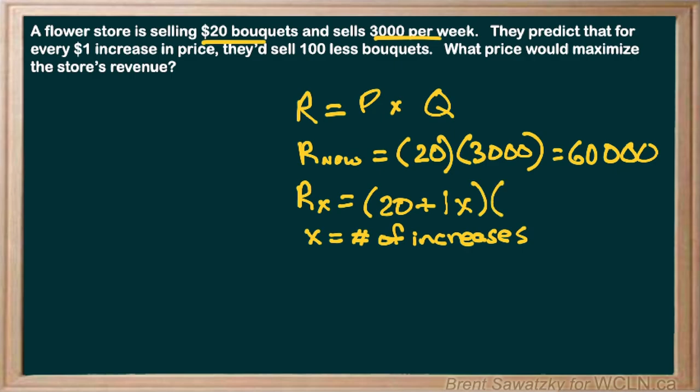And so that's the price in there. And then the quantity, well, again, we say we started with 3000, but they would sell 100 less. So we would lose 100 for every one of those increases. So basically, if they see an increase in the price, they see a decrease in the number of items sold, in this case, bouquets.